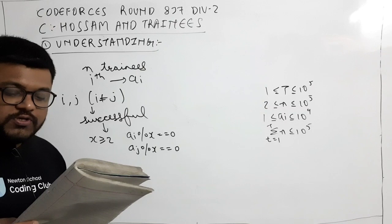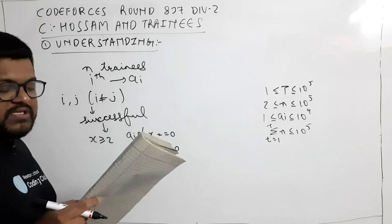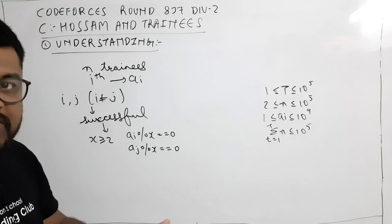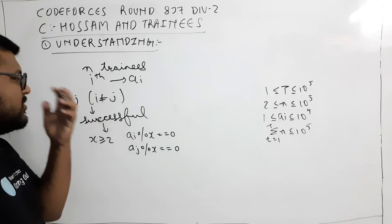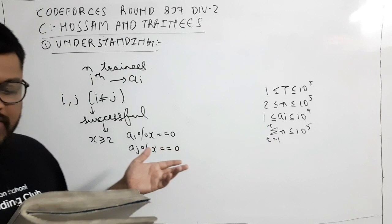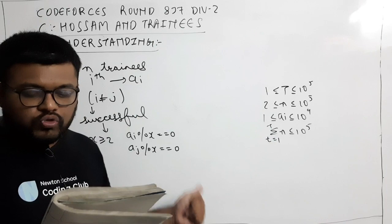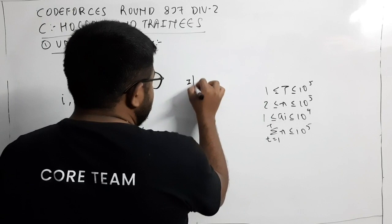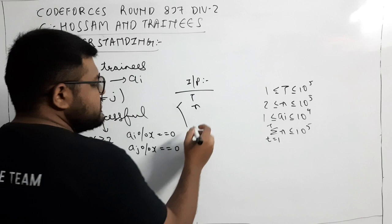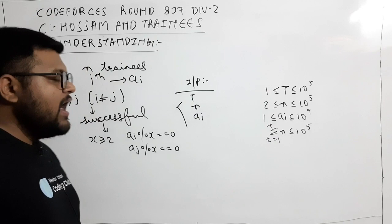Awesome wants to know if there is a successful pair of trainees. Awesome is very tired so he asks you for help. Out of all possible N×(N-1)/2 pairs, we need to determine if at least one successful pair exists, and print 'YES' if it does.